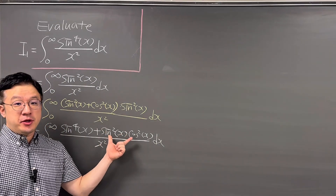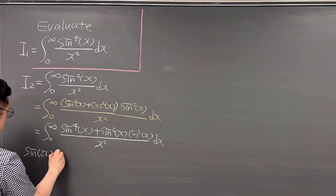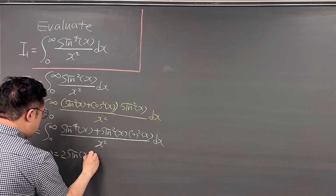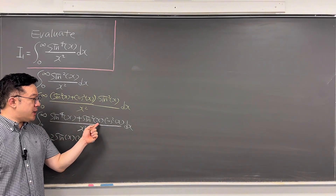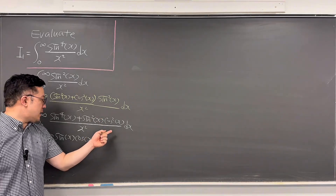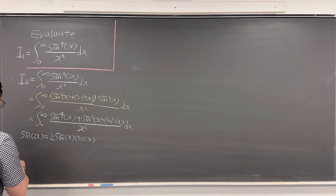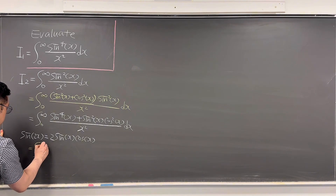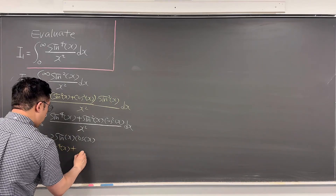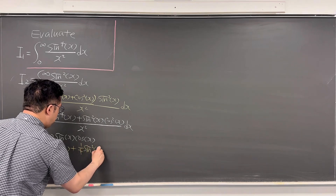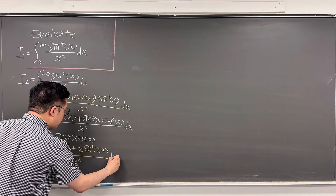The second term in the numerator: let me use the double-angle formula. Since sine of 2x equals 2 times sine x times cosine x, that means sine squared x times cosine squared x equals 1/4 times sine squared of 2x. So the integral is now the integral from 0 to infinity of sine to the power of 4x plus 1/4 times sine squared of 2x, all over x squared dx.